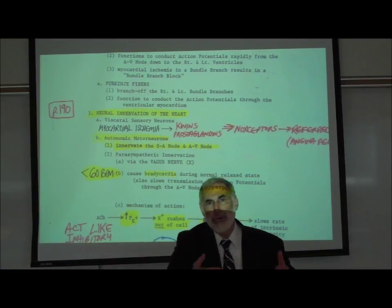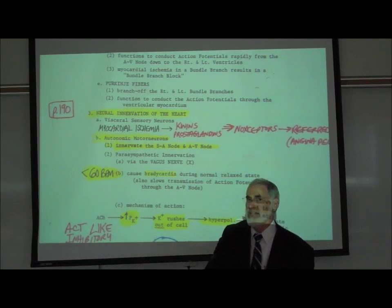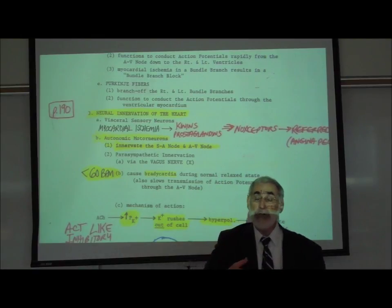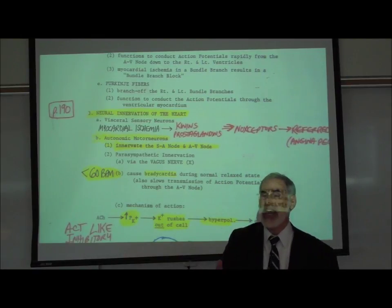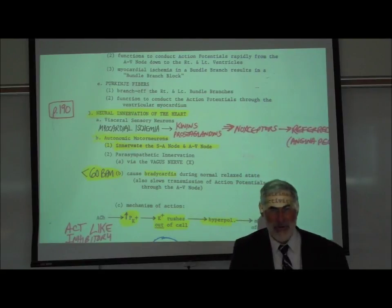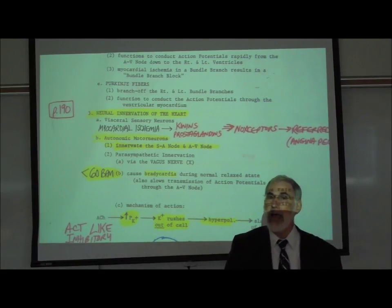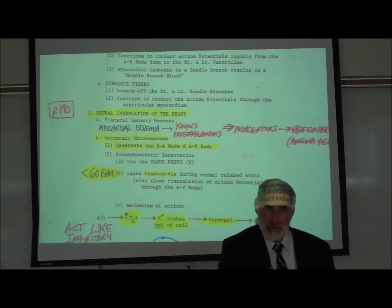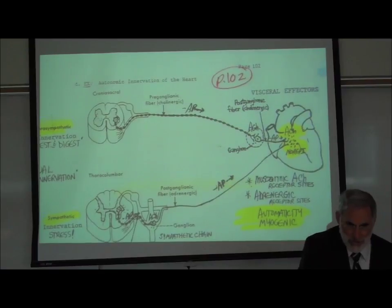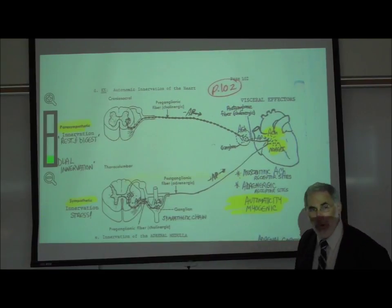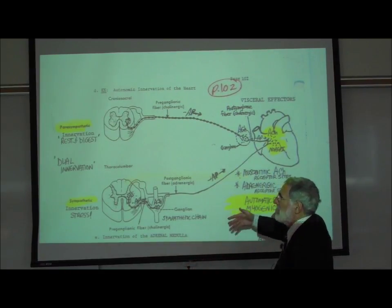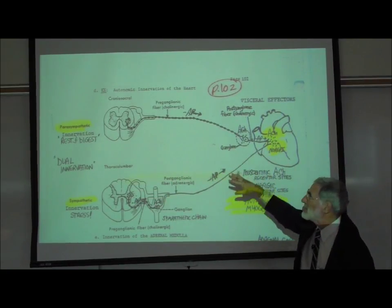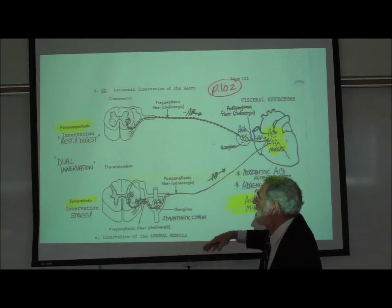In addition to visceral sensory neurons sending information from the heart to your central nervous system, there are parasympathetic and sympathetic autonomic motor neurons that innervate the heart and allow modulation of heart activity. Let's remind you on page 102, where we are reminded of how both parasympathetic and sympathetic autonomic motor neurons innervate the heart.